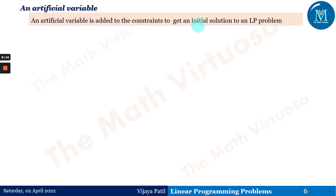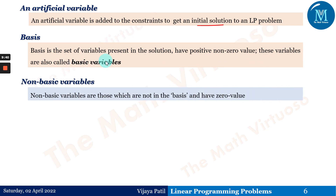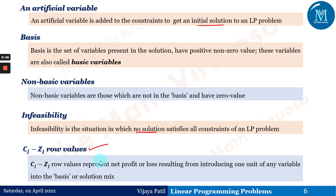An artificial variable is added to a constraint to get an initial solution to the LP problem. This will be discussed in detail when covering the Big-M method or penalty method. Basis refers to the set of variables in the solution that have positive non-zero values; these are also called basic variables. Variables not in the basis are called non-basic variables. Infeasibility refers to a situation where no solution satisfies all the constraints. The Cj minus Zj row values represent the net profit or loss resulting from introducing one unit of any variable into the basis — a very important concept in the simplex method.